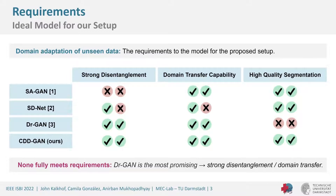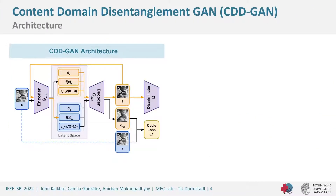So we present our own method, CDDGAN, which performs well in all three cases. In the architecture, an input image X goes into the encoder, which disentangles the content and stores it in FXR. The output domain is set in DR in the latent space and therefore doesn't need to be stored in FXR. A noise vector and all three of these go into the decoder to produce image X-bar, which then goes into the discriminator.